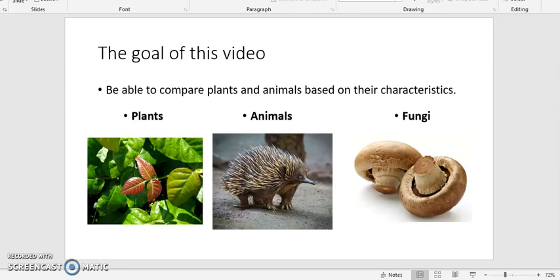So in this case, these are just a few examples of these different groups of organisms. For plants, I've got this poison ivy. You can tell it's got these three leaves, and at this time of the year, in the fall, it starts to turn this brilliant reddish, bright, fiery red color. I've got an echidna here for our animal example, and then I have some mushrooms here for our fungus example.